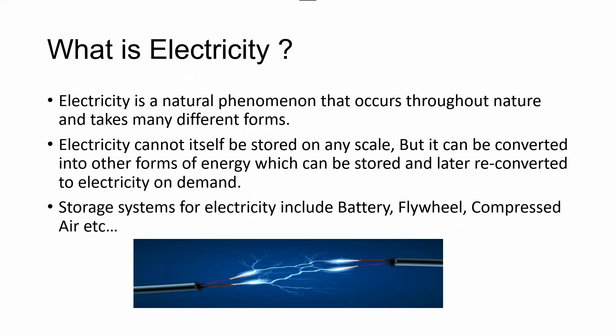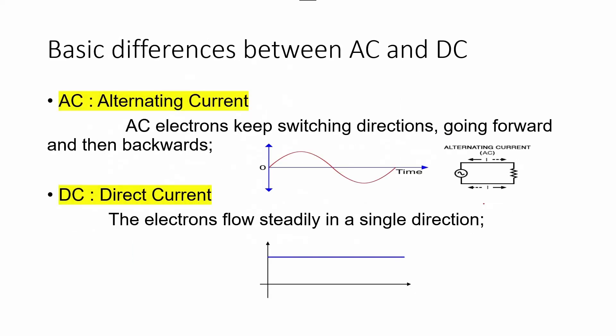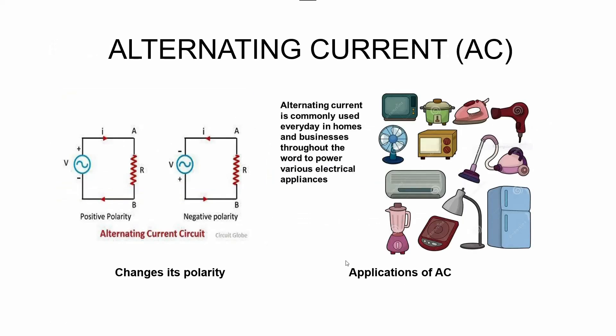Electric current flows in two ways: as alternating current or direct current. The main difference between AC and DC lies in the direction in which the electrons flow. In AC — alternating current — electrons keep switching directions, going forward and then backwards. In DC — direct current — the electrons flow steadily in a single direction. But in this video, we will go deeper to understand what is alternating current.